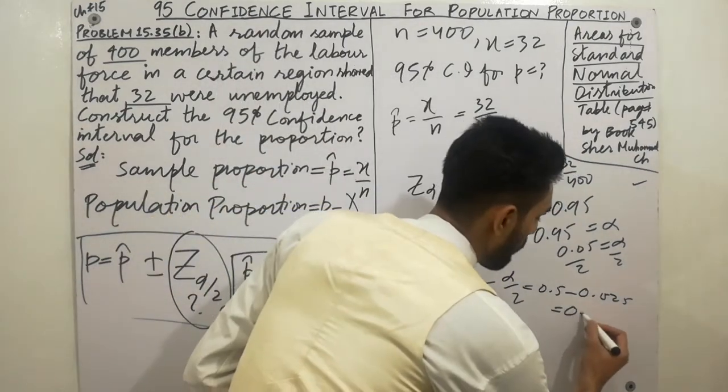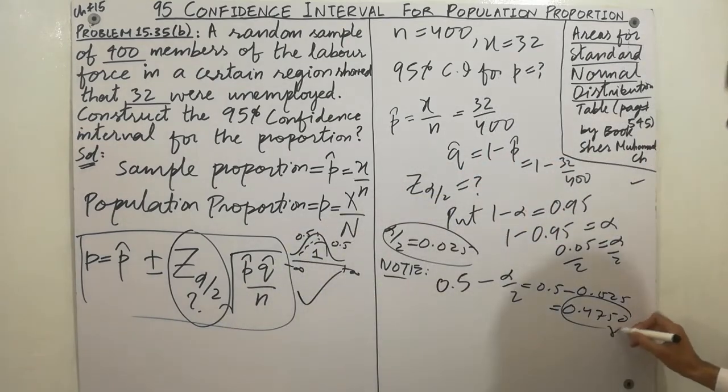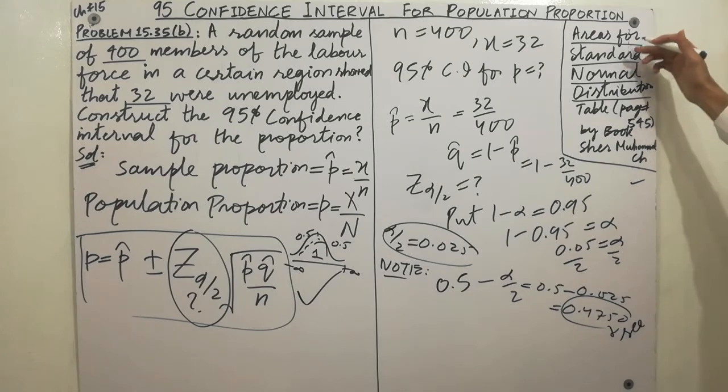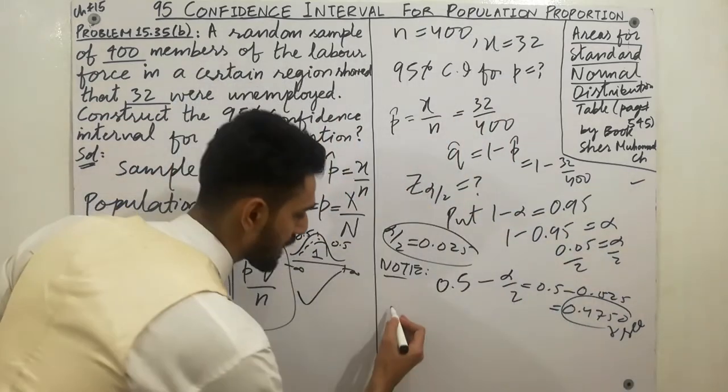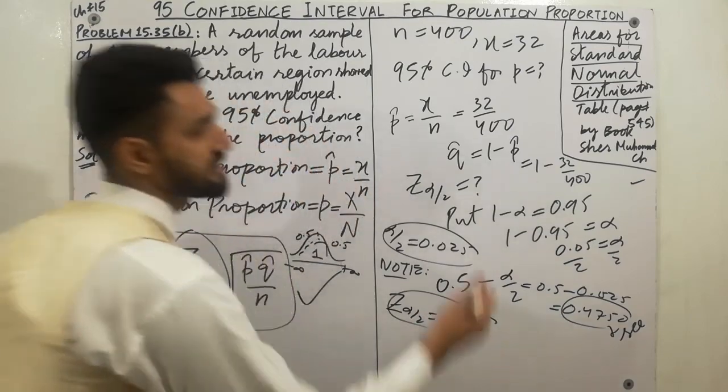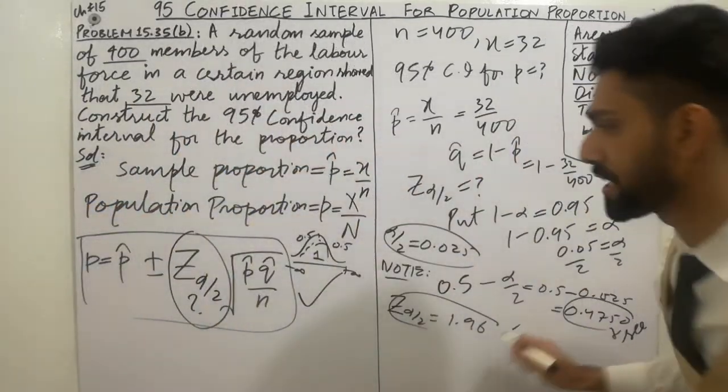Subtracting, that value is 0.4750. Find this value in the table and you can easily calculate the value of z alpha by 2, which will be 1.96, calculated from the table.